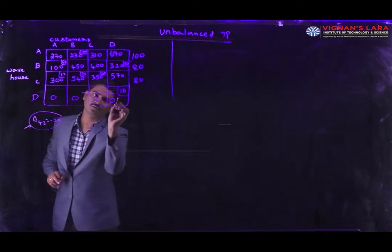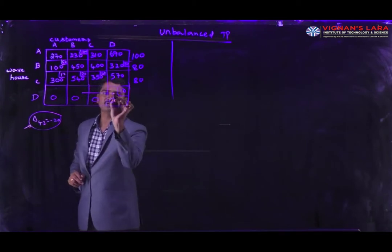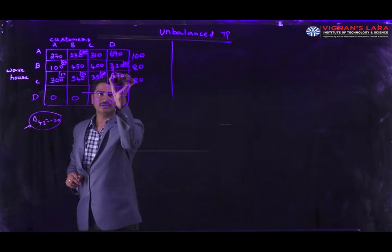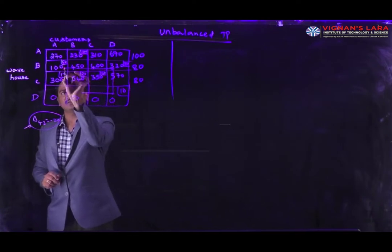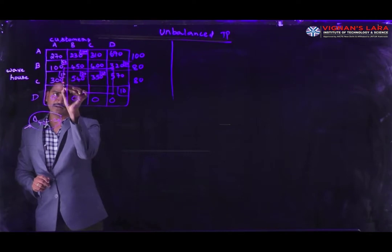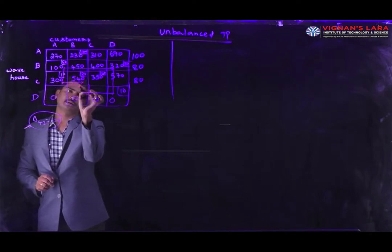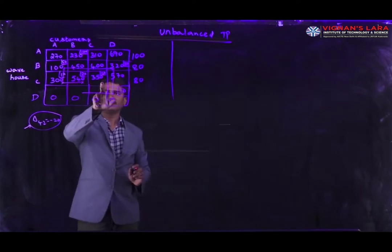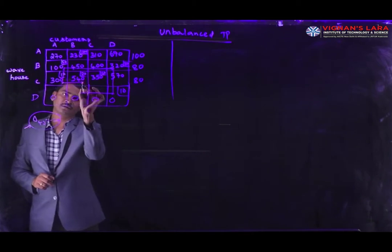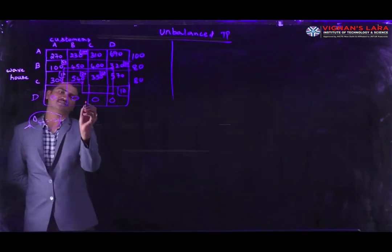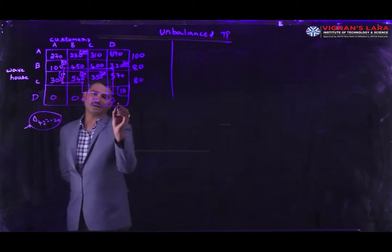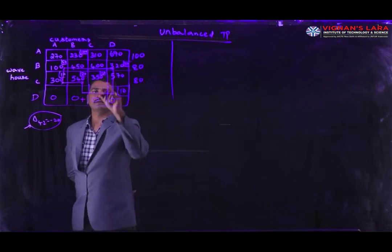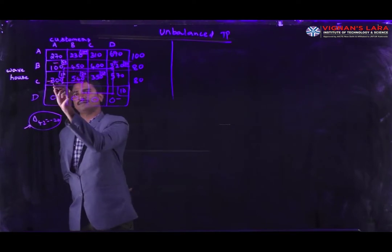We draw the loop starting from the delta_42 unallocated cell. At the unallocated cell we assign a positive sign, then alternate signs: positive, negative, positive, negative. The loop has six corners in total. The allocations at corners are: 10 (plus), 20 (minus), 0 (plus), then with negative sign, 30 (plus), and 50 (minus).